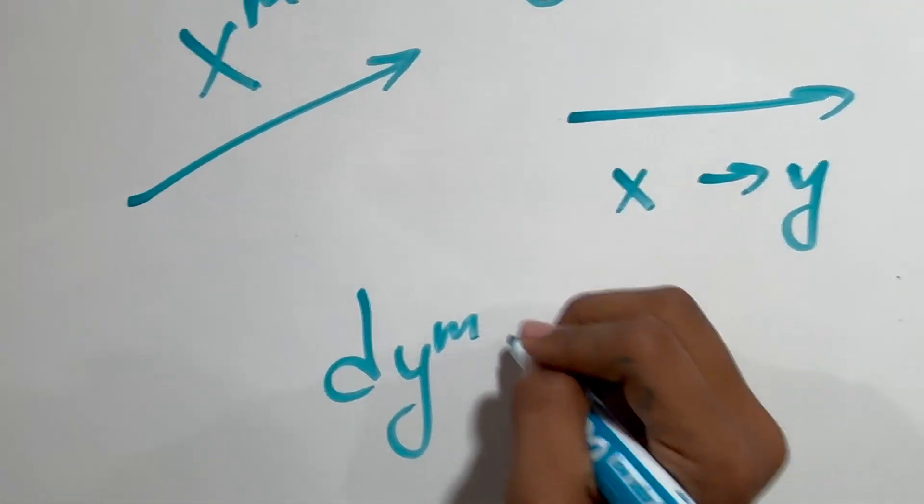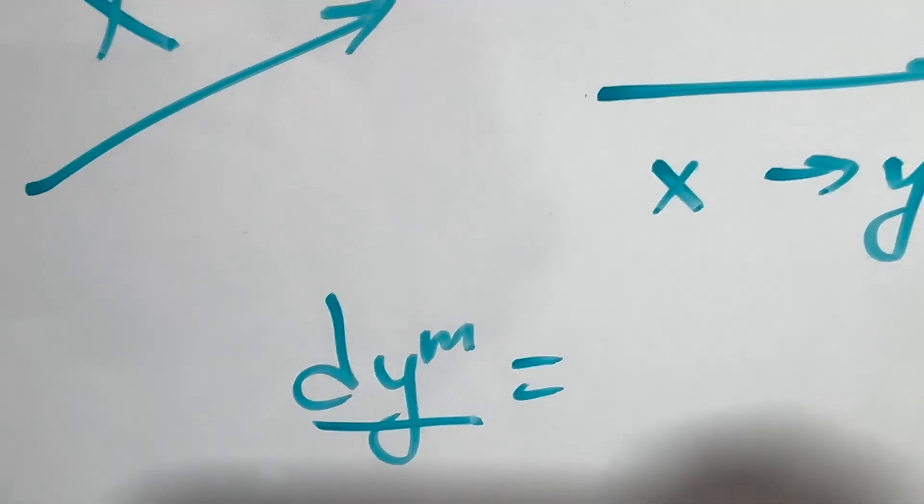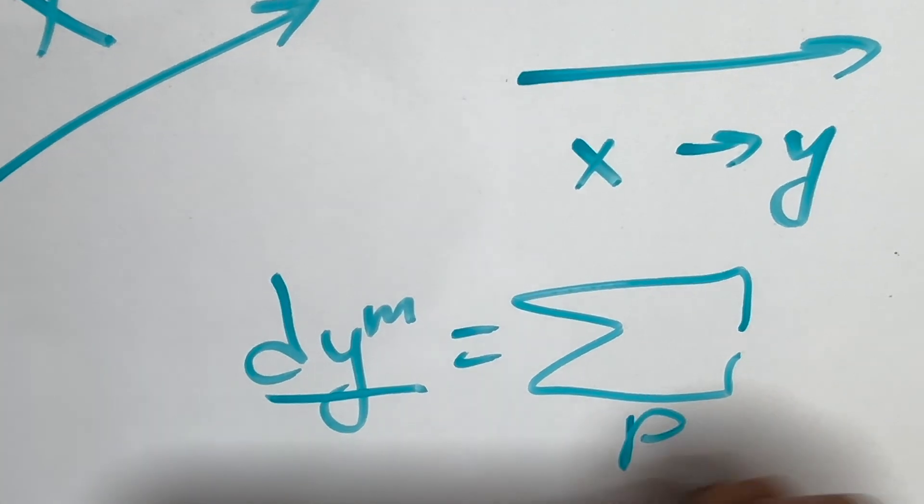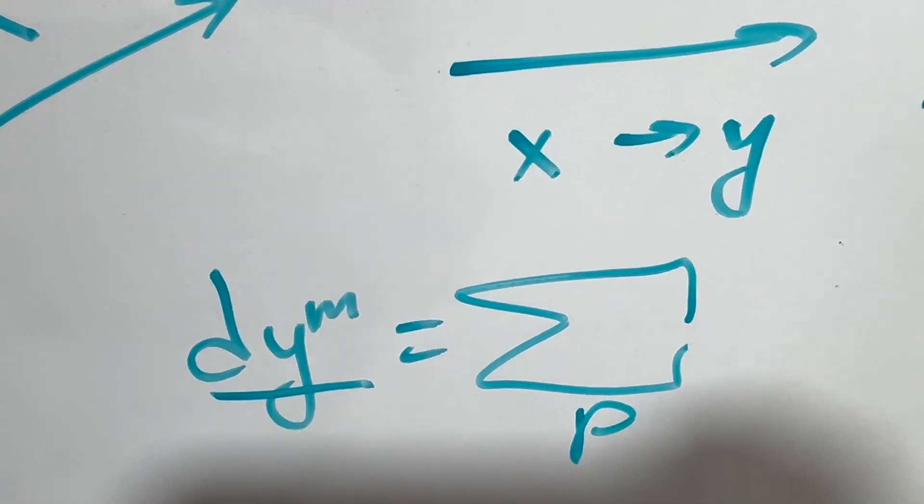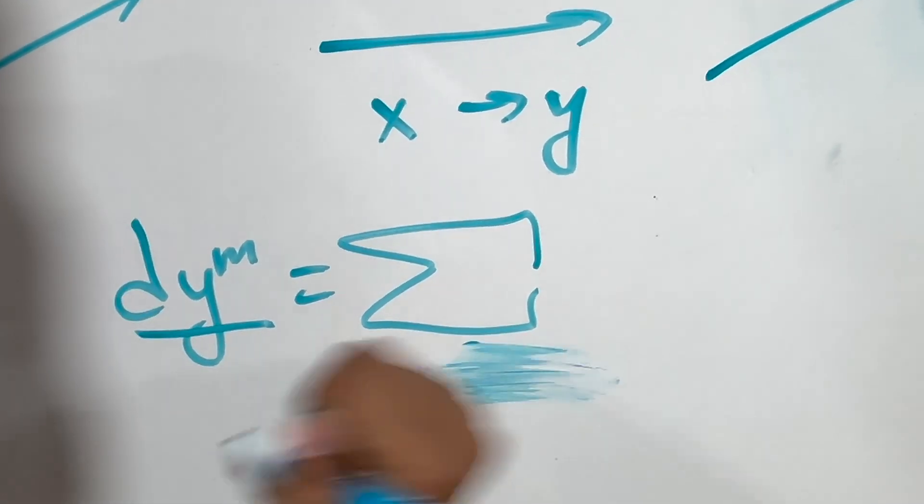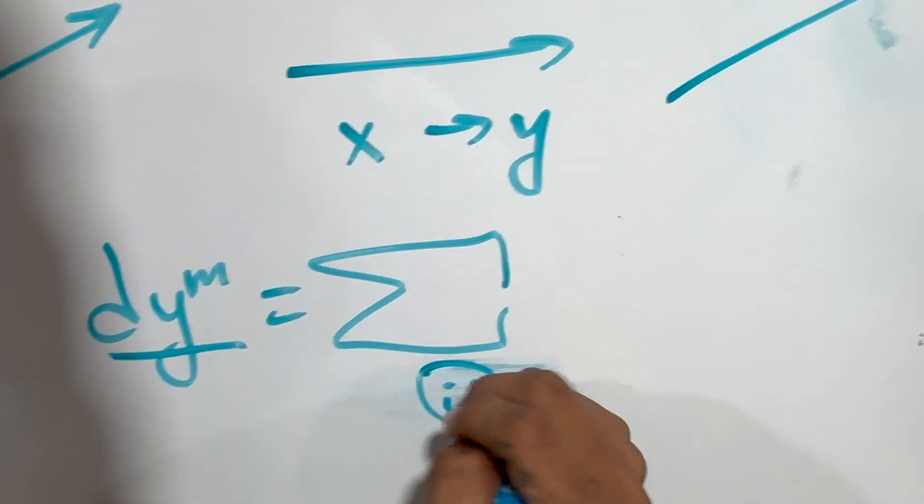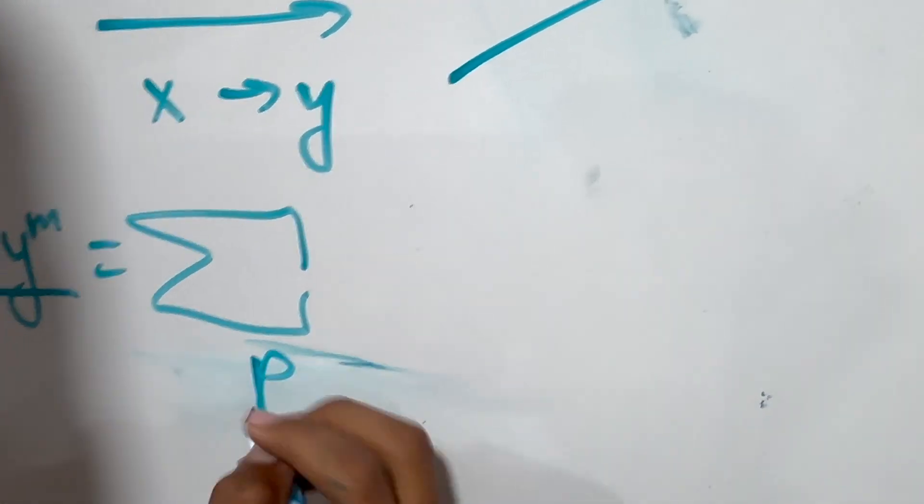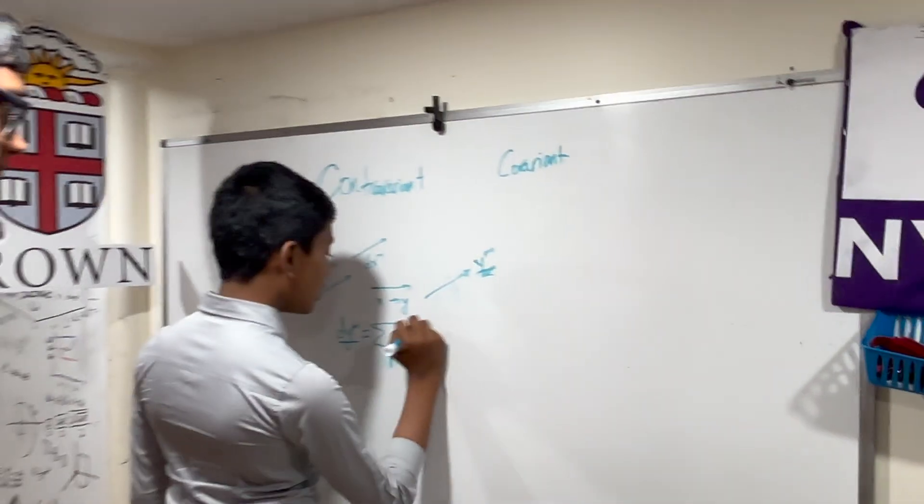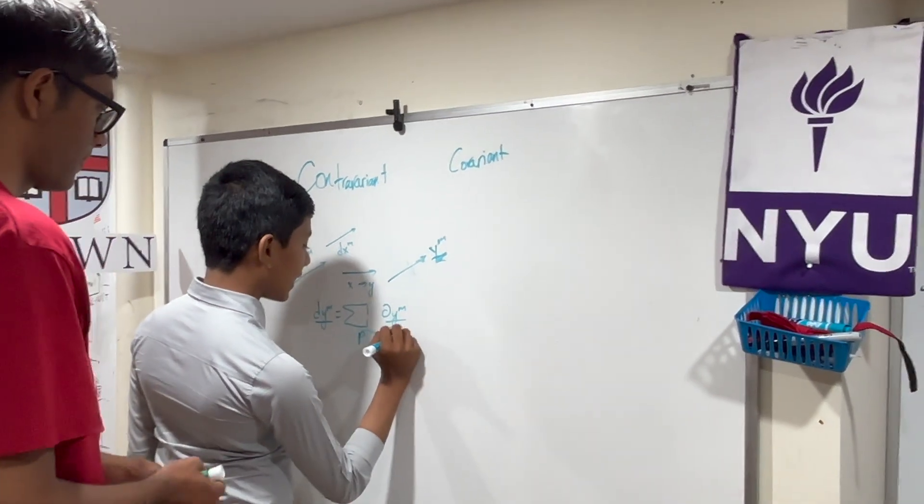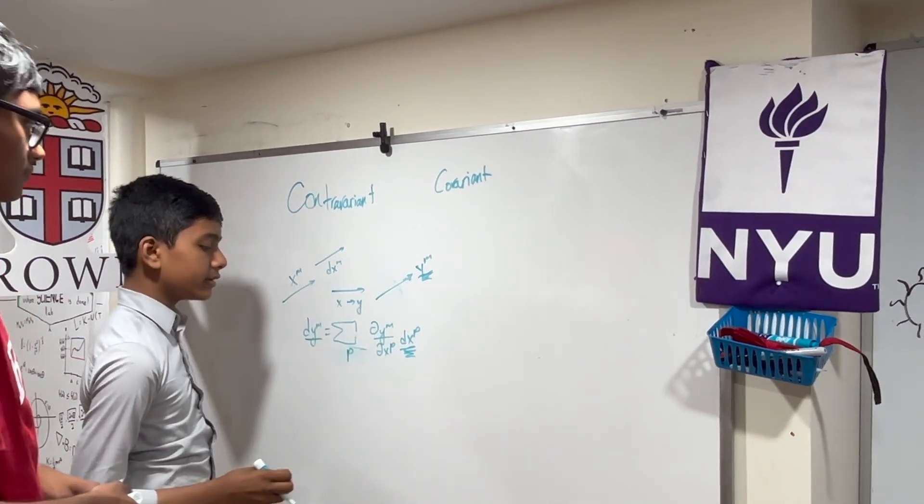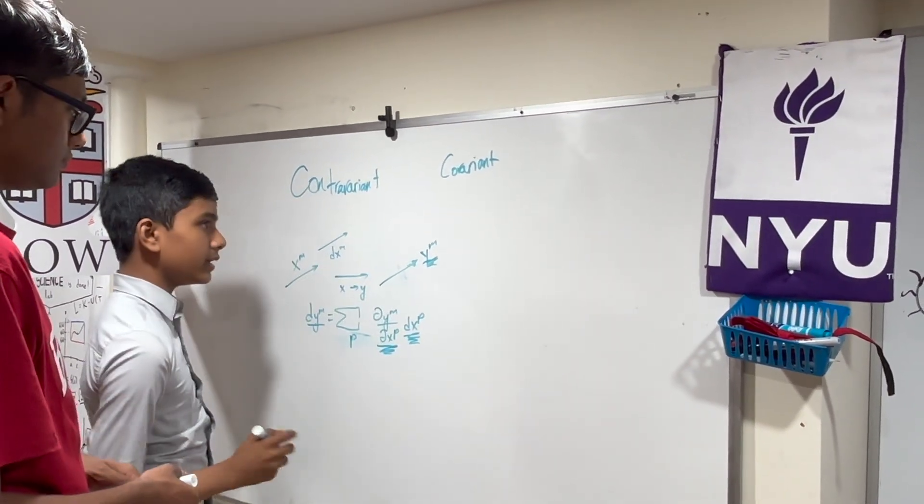Well, we can say that dy^m, which is our contravariant in the new reference frame, is equivalent to the summation over a dummy variable p. It doesn't matter what you actually call it, we can call it p, we can call it q, we can call it smiley face, but for simplicity, I'm going to call it p. So then we have the sum over p of partial y^m partial x^p dx^p, where this is our old contravariant vector.